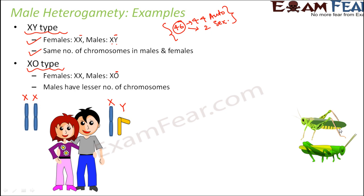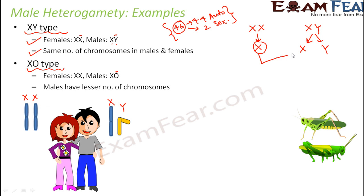The X-O type is seen in insects like grasshoppers. Now let us understand how sex determination actually works in XY type. A female (XX) and a male (XY) undergo sexual reproduction. The female can give only one type of gamete — X. The male can give either X or Y. If the X from the female combines with the X from the male, XX is formed and a female offspring is born. If the X from the female combines with the Y from the male, XY is formed and a male offspring is born.